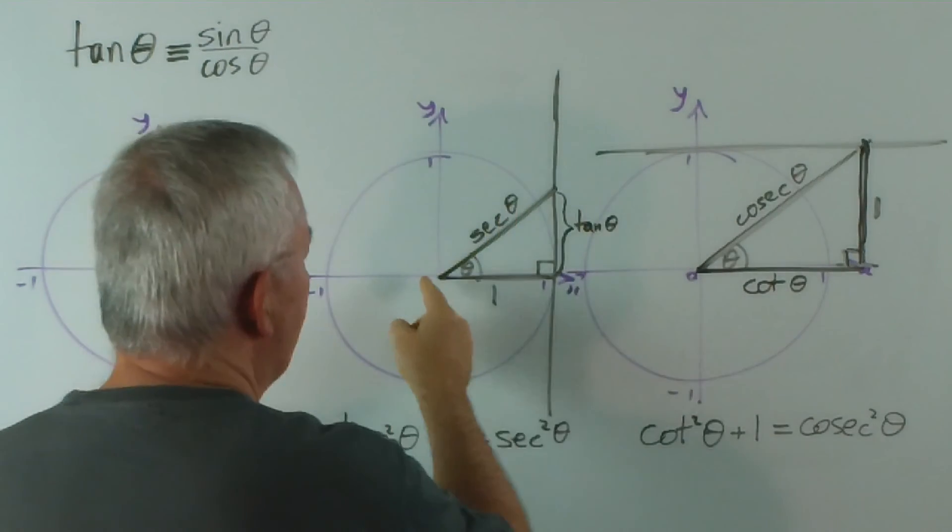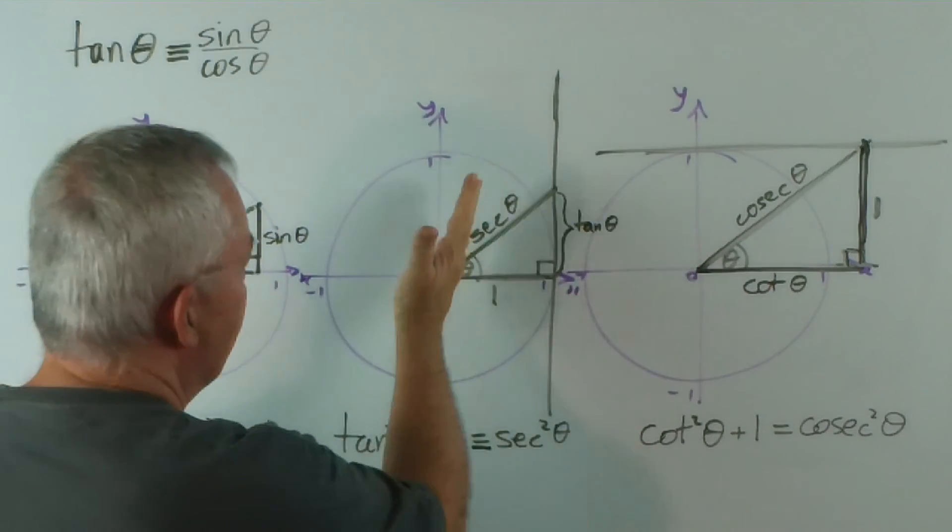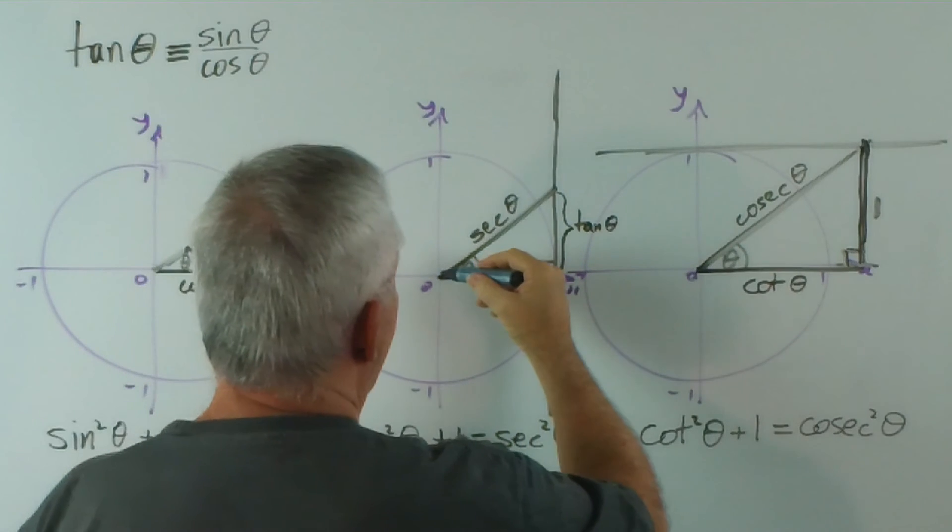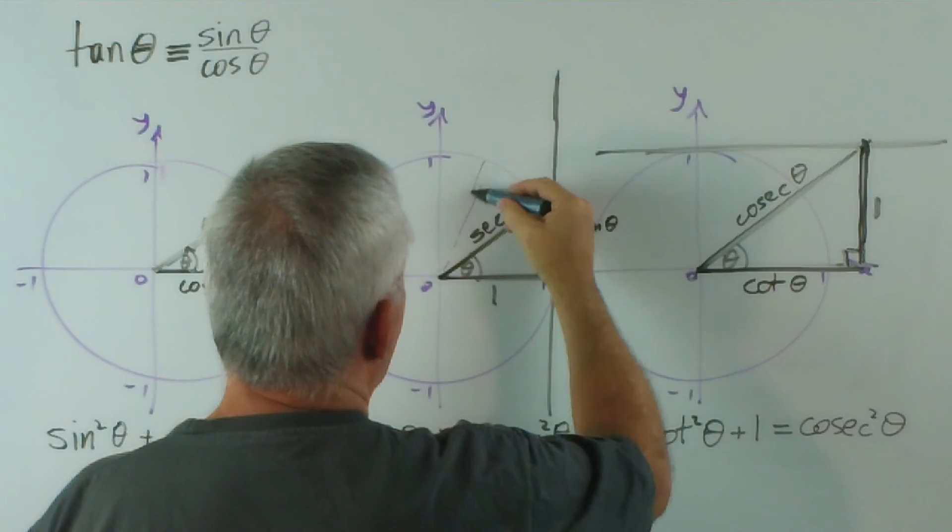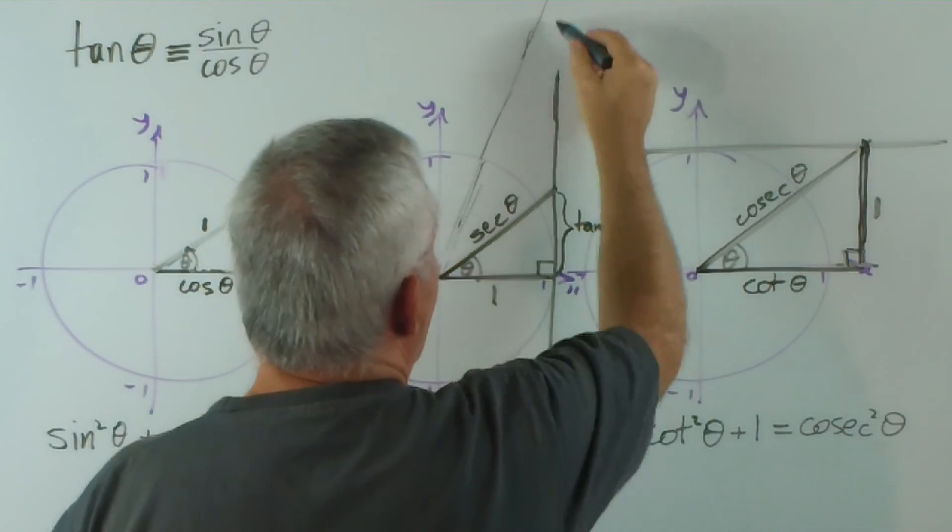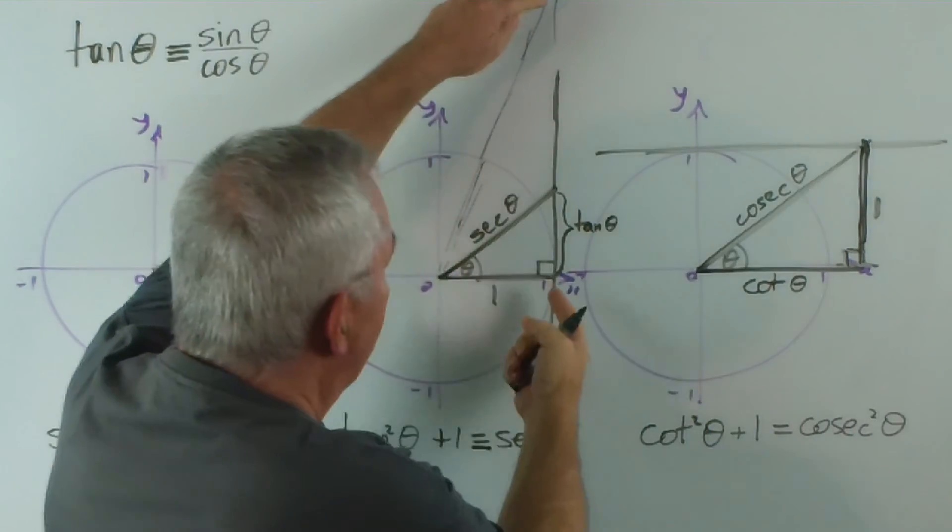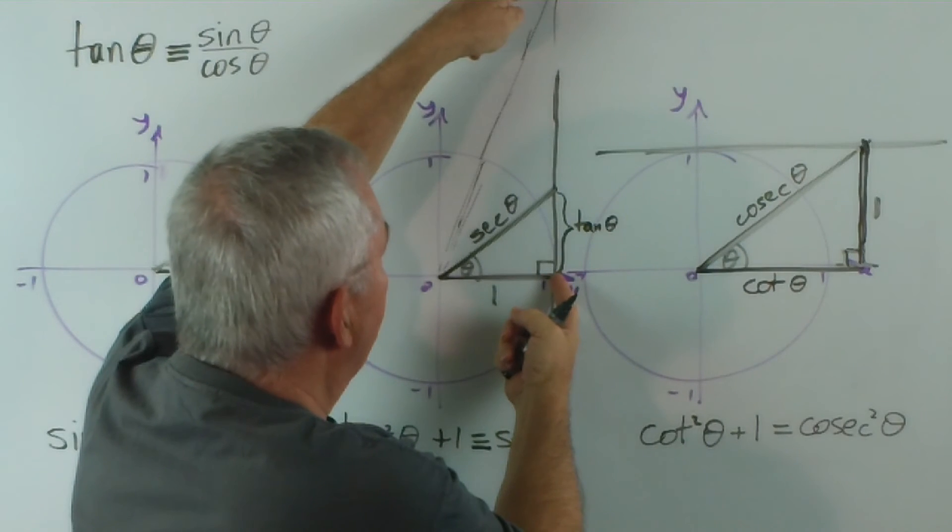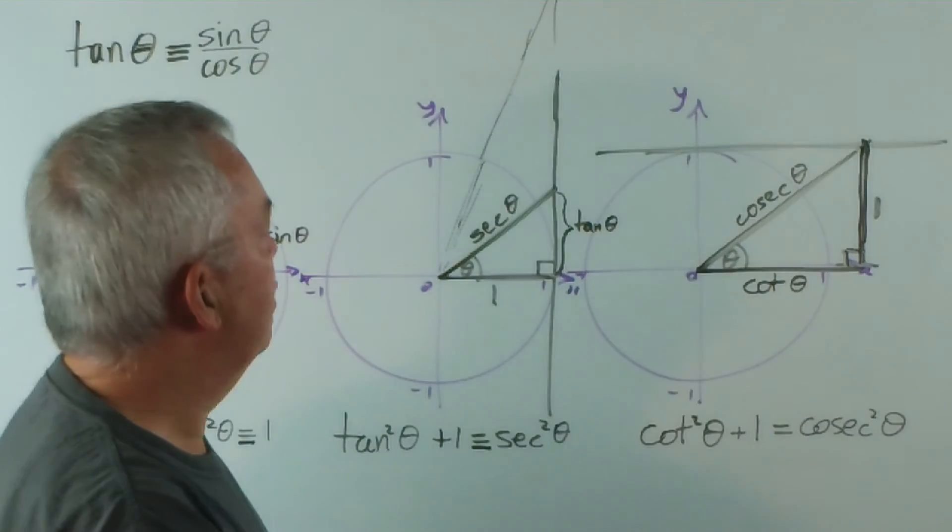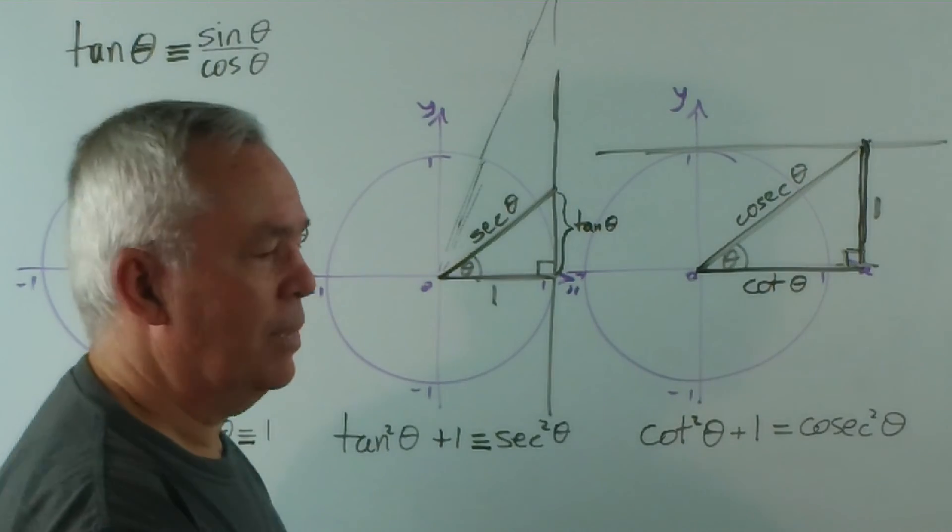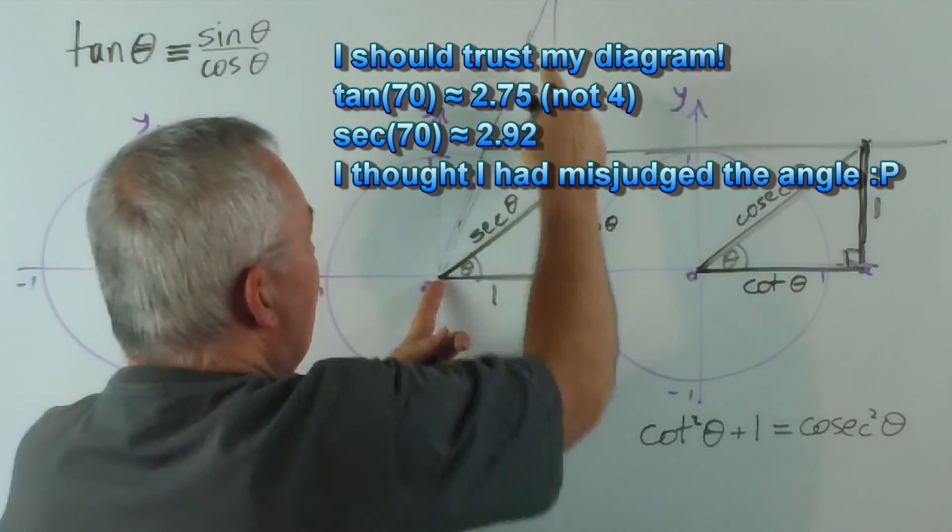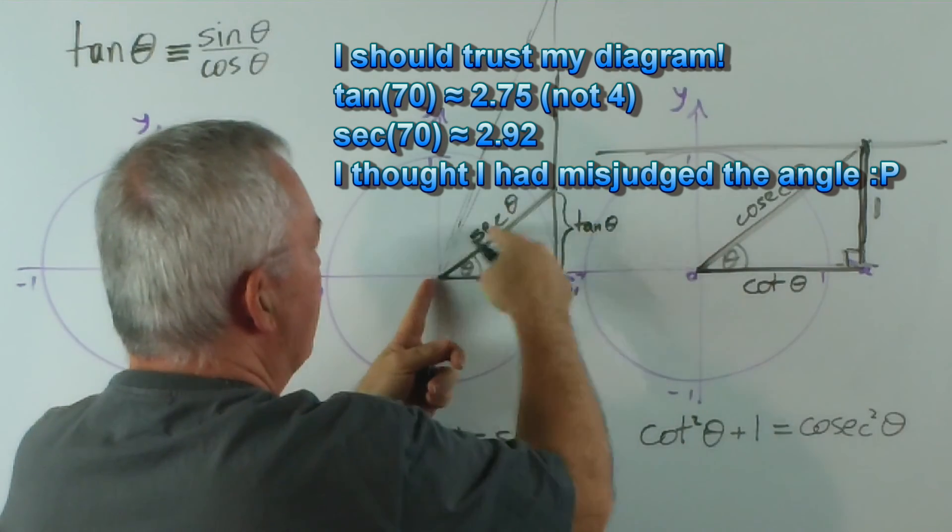In this one, if we chose 70 degrees, for example, you can see that this would... 70's probably about here. This would go quite some distance up before it met the tangent, so the tangent of 70 would be perhaps 4 or something like that. And the secant would be just a little tiny bit longer, because it's the hypotenuse, as you can see.